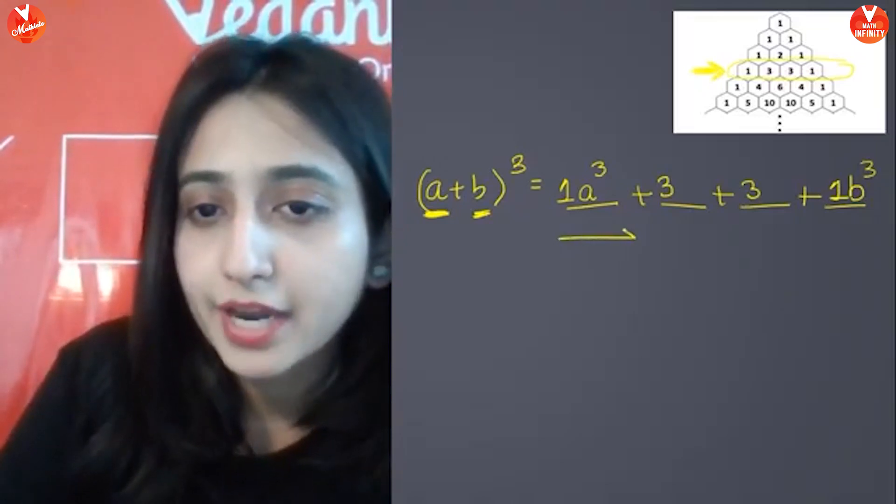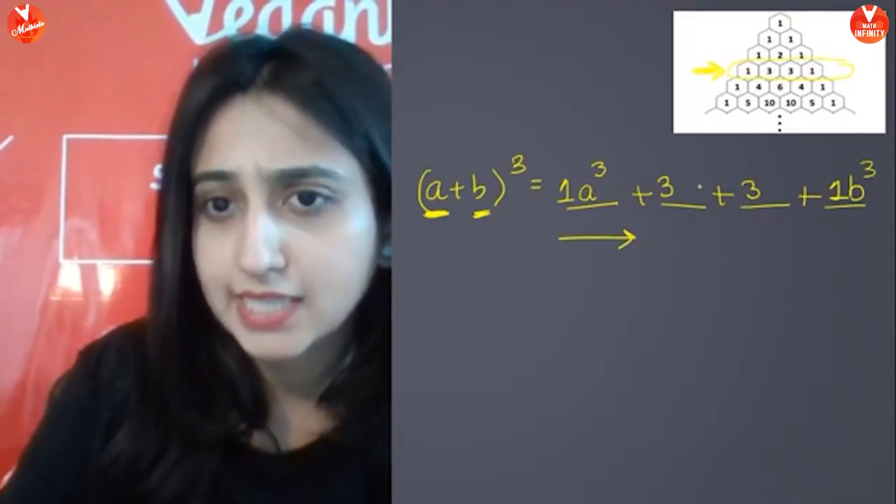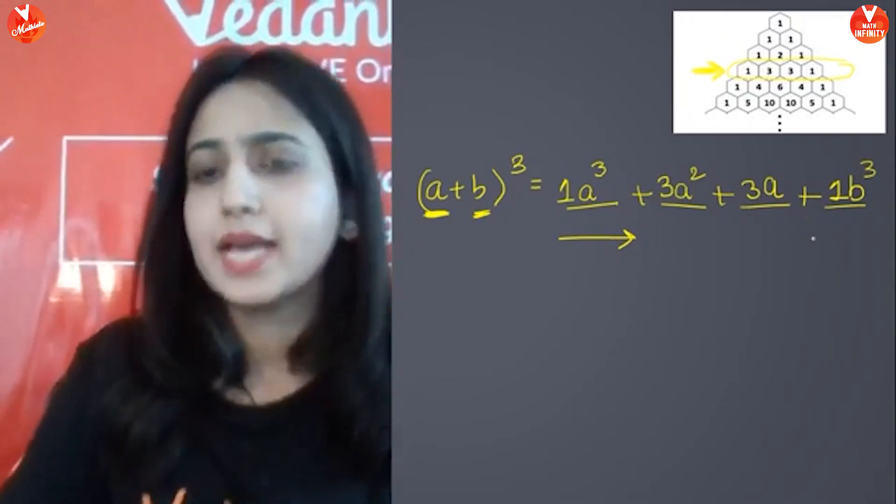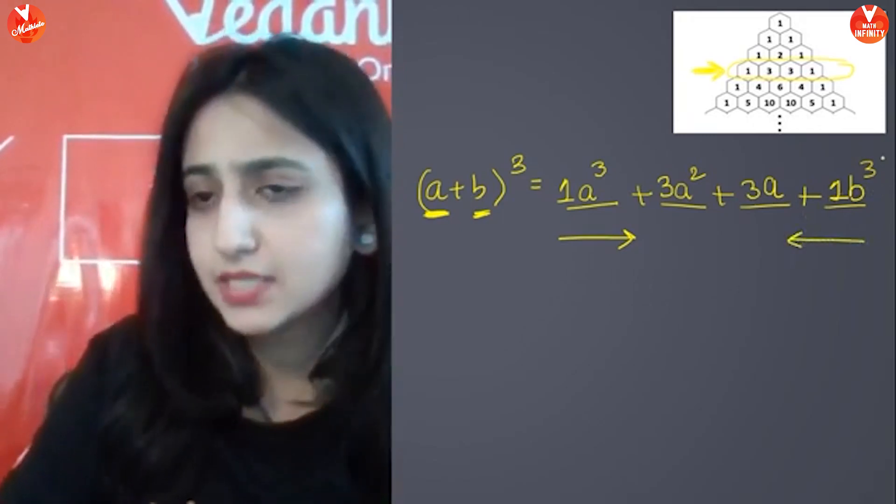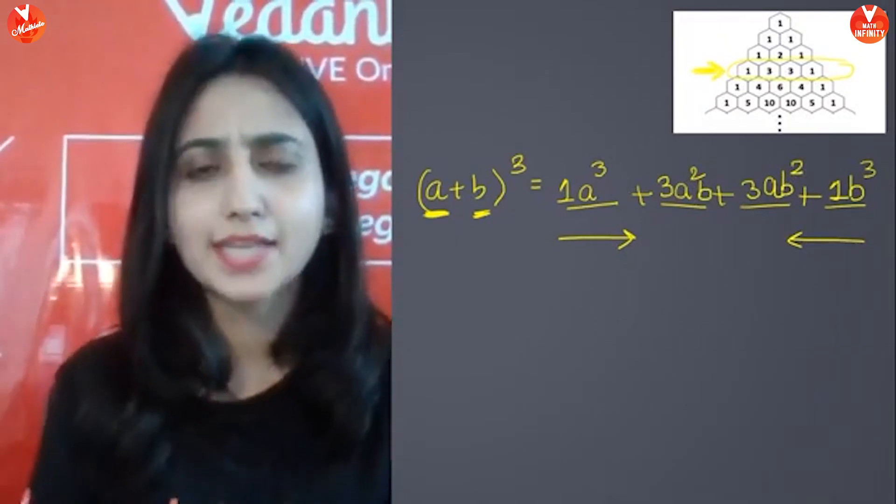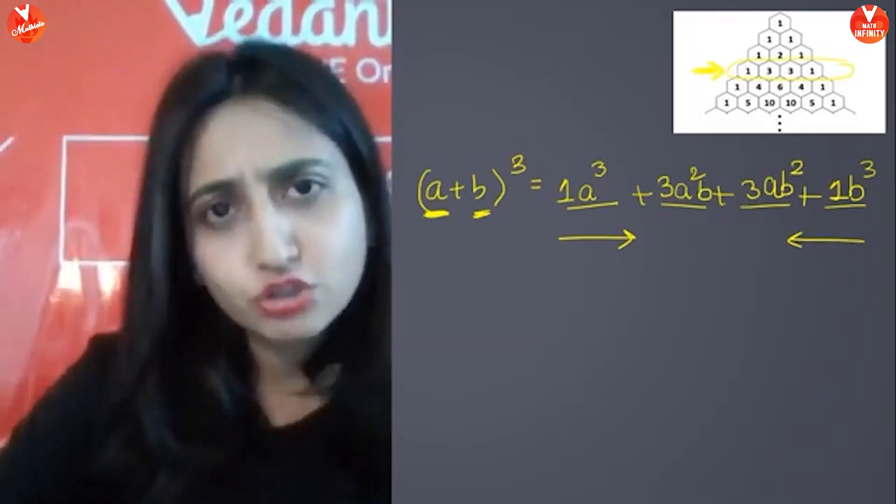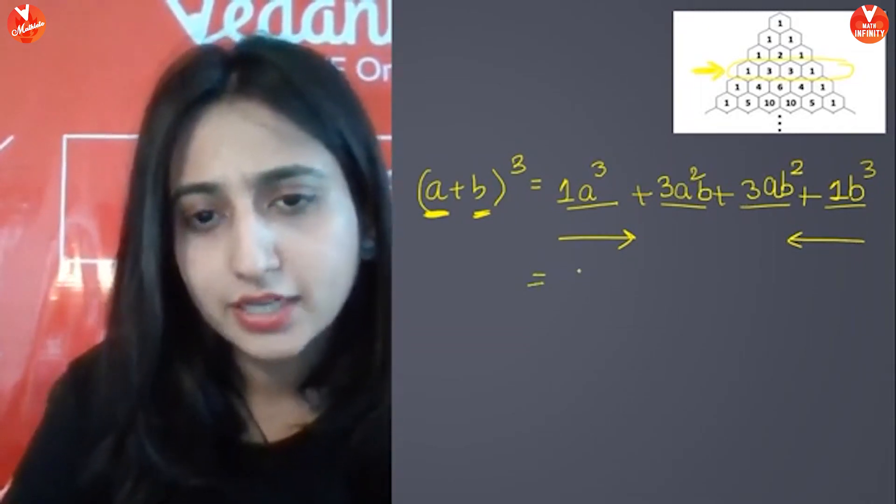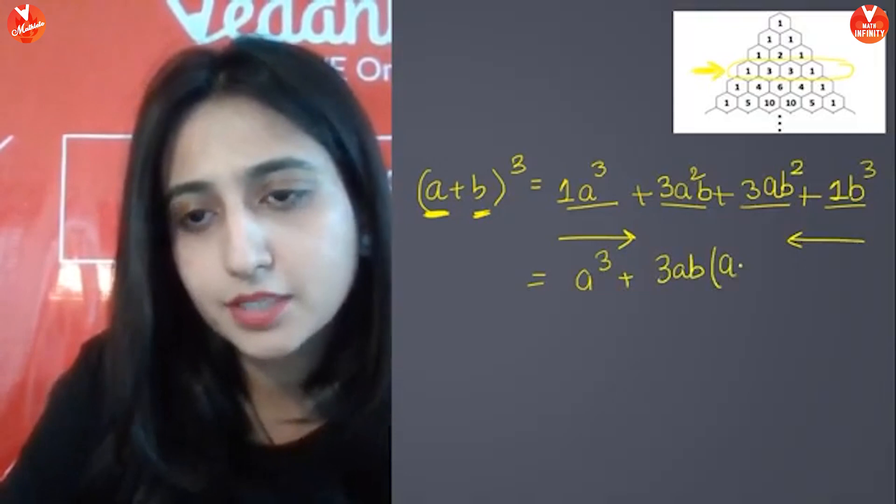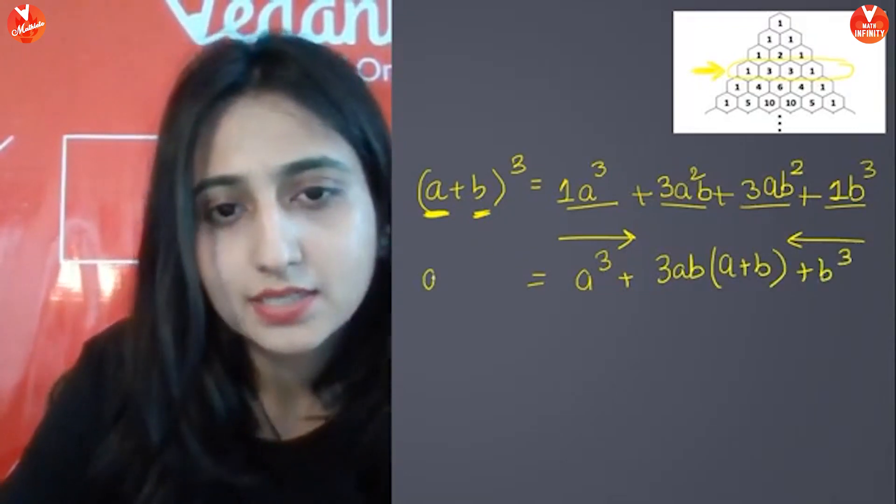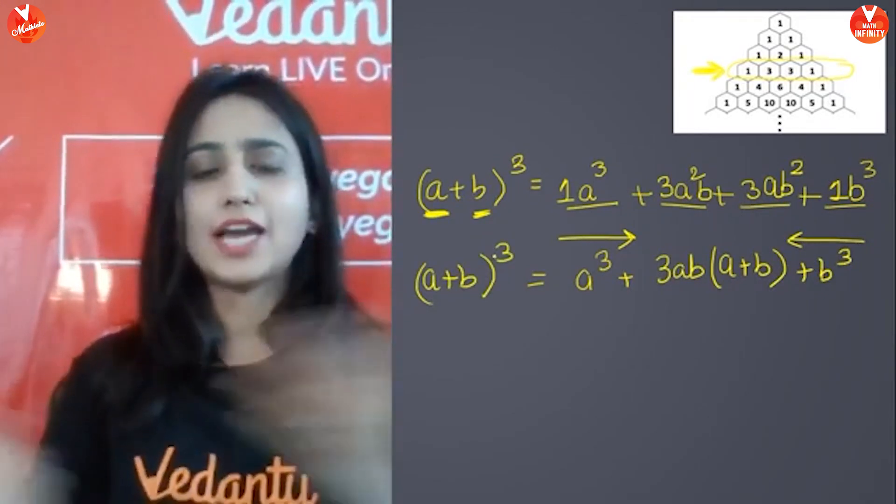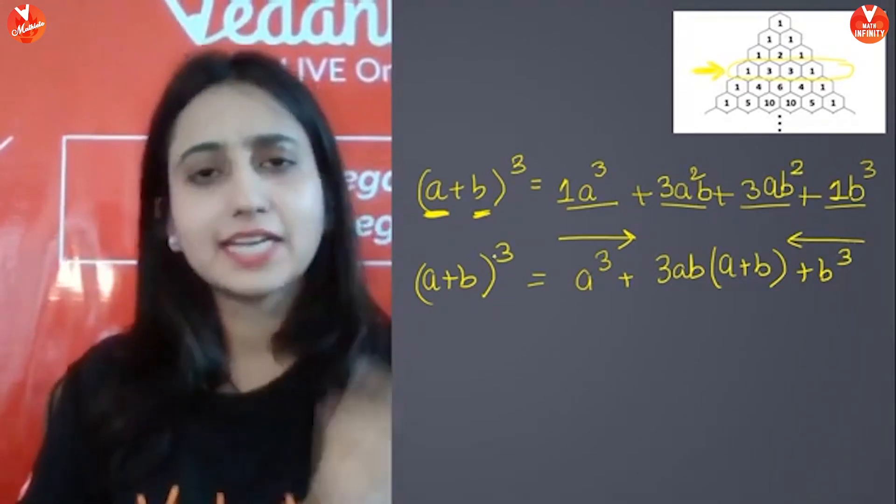And then, when we move from here to here, we are going to reduce the power of A. So, here it is A cube. We can write it A square, then A and then here A raised to power 0, which is 1. And similarly, when we move from here to here, I will write B cube. Here B square, then I will write B and then B raised to power 0, which is 1. Formula is ready. Easy, right? So, we can also generalize it further. A cube plus if I take 3AB common, what do I get? A plus B in the bracket, and then B cube. So, this is your formula number 3. Identity number 3. Easy peasy.